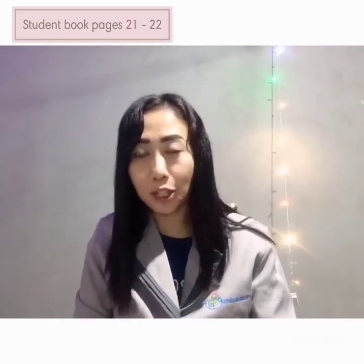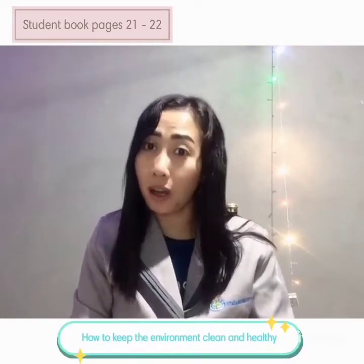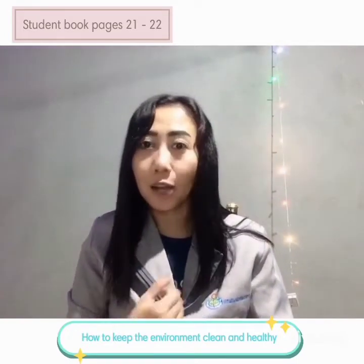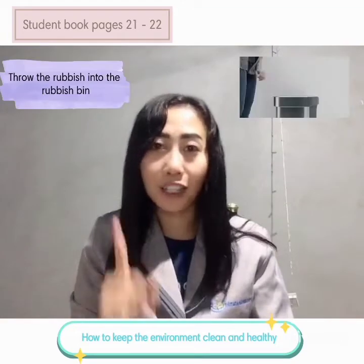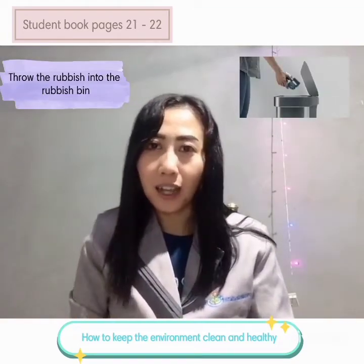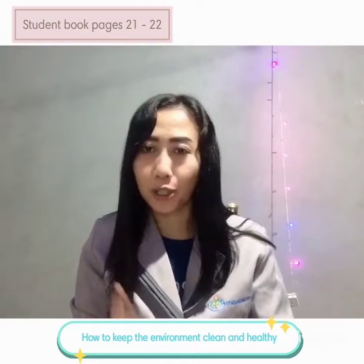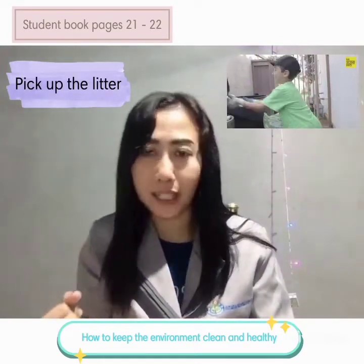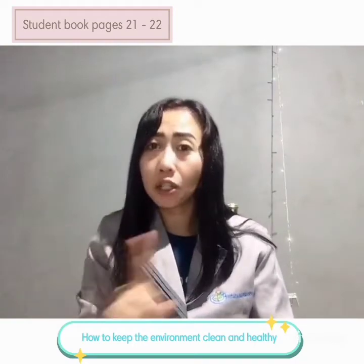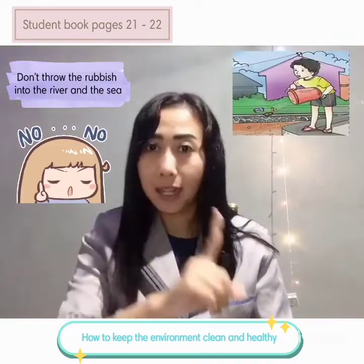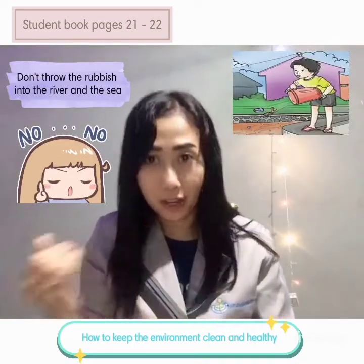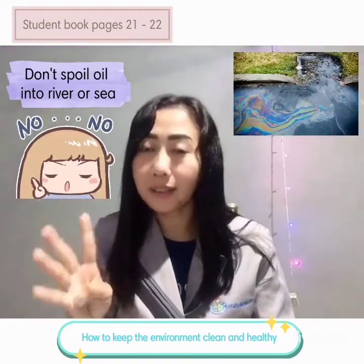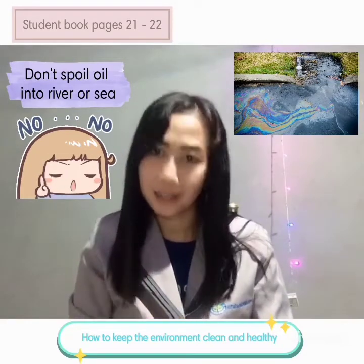In page 21 and 22, we talk about how to keep the environment clean and healthy. What we can do: number one, throw the rubbish into the rubbish bin. Number two, pick up litter to help clean up the surrounding. Number three, don't throw rubbish into the river or sea. Number four, don't spill oil into the river or the sea.